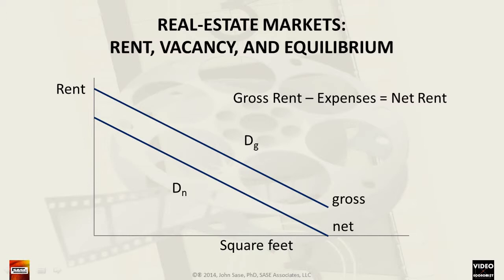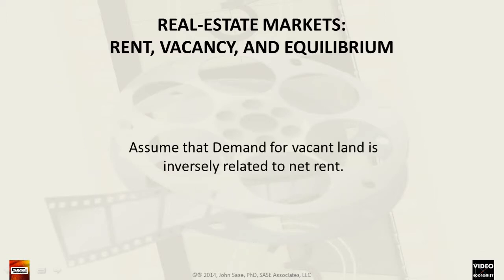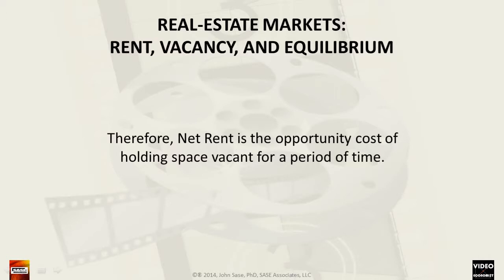Let's go a bit deeper into this matter. First, we assume that the demand for vacant land before improvements are made is inversely related to net rent. In other words, the quantity of vacant land demanded increases as net rent decreases. Because of this inverse relationship, we can consider net rent as the opportunity cost of holding space off the market, keeping it vacant for a given period of time. In other words, renting land out to a tenant represents the next best use of the land in comparison to owners holding and perhaps using the land themselves.